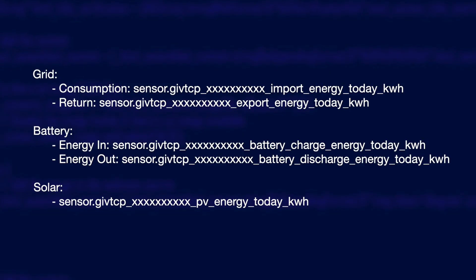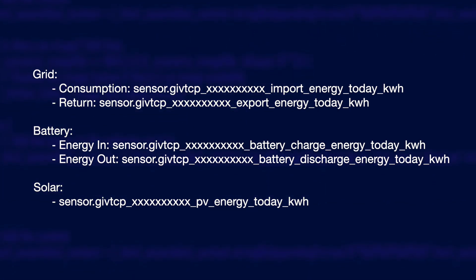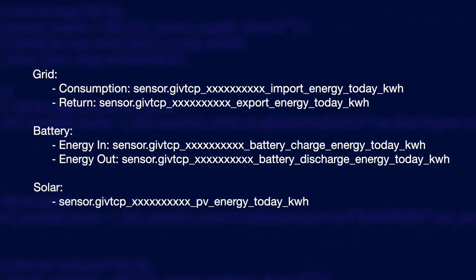Repeat the same thing for all of those other sensors - I'll put them up on the screen again. The same process for each of those energy sensors: create them as daily cycle utility meters and then add them into the Energy Dashboard in the relevant place.